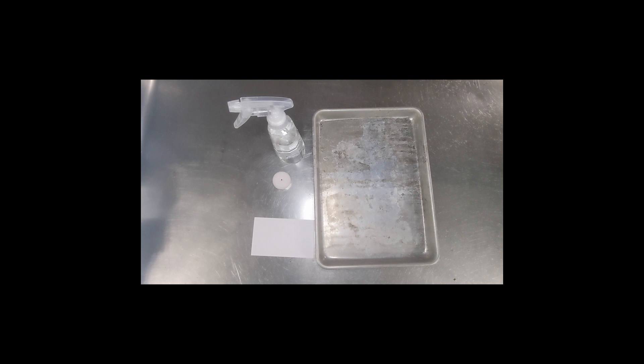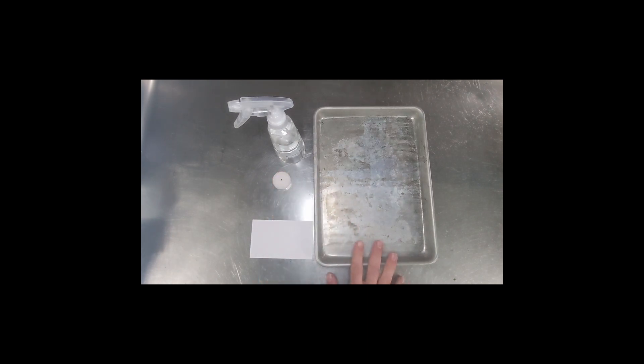Here are the materials that you will need for the card and candle model. There is an index card or cardstock, a candle, a spray bottle of water, and a metal tray just to contain anything if anything goes wrong.